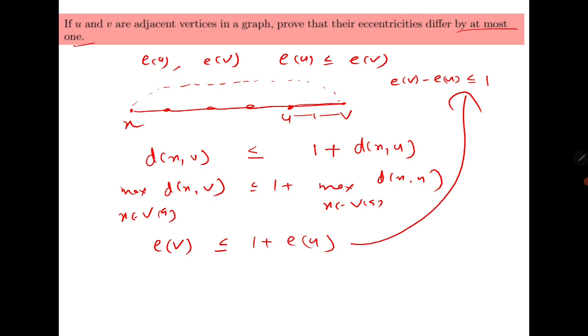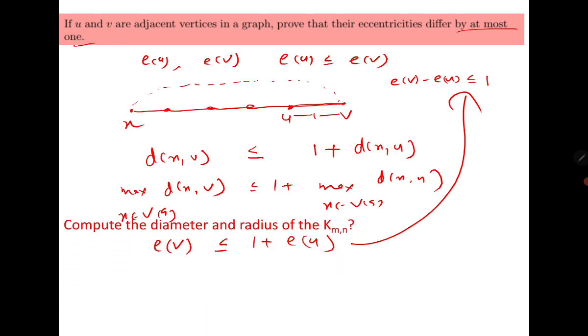So this is what needed to be proved. The next question is to compute the radius and diameter of K_{m,n}, the complete bipartite graph. The question is straightforward.